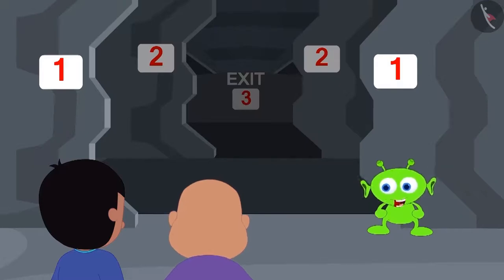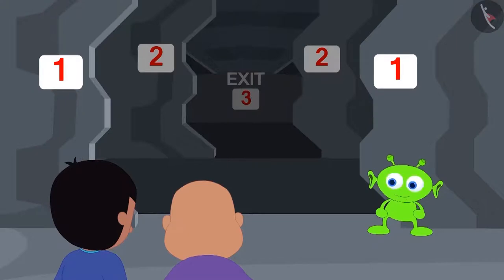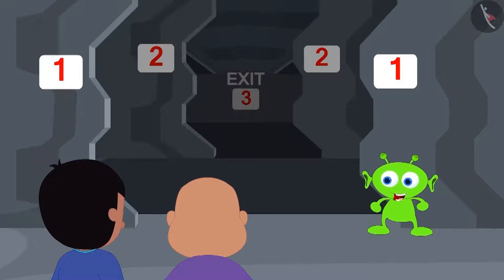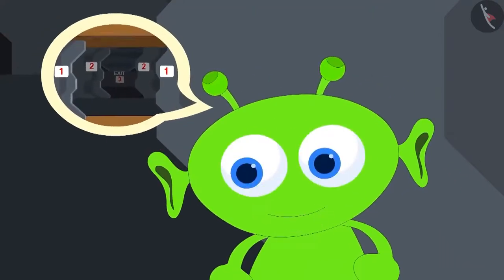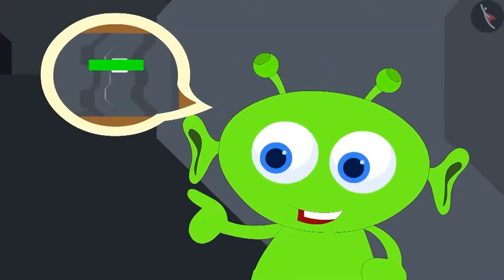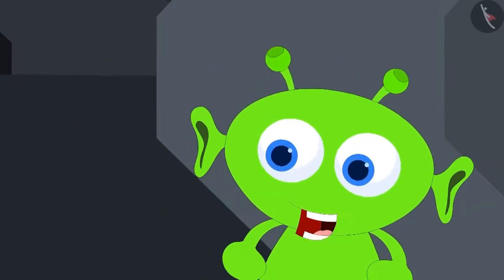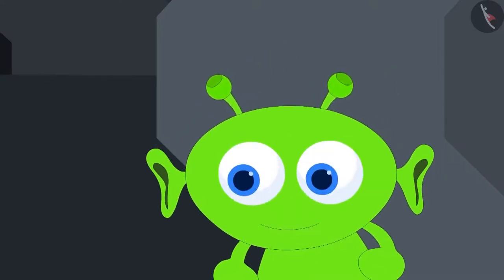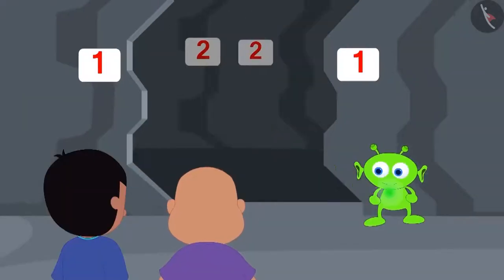Ha ha ha ha! Last time you escaped from my captivity. Today, I will not let you go. There is just one way to get out of this spaceship. This spaceship has three doors. Each door has a code on it. If you can correctly solve the codes on all the three doors, only then you will be able to go back. Ha ha ha ha! Jeev said this and disappeared.